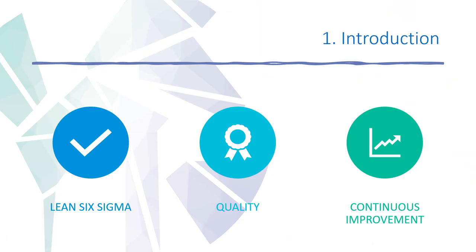Lean Six Sigma is a quality methodology whose objective is to improve processes in order to increase their profitability and productivity. It is a combination of statistical tools, Lean, and Six Sigma philosophy that is always oriented to continuous improvement.